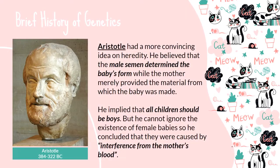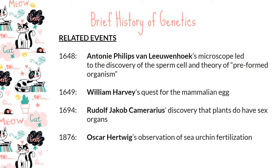After some time, nothing much progressed in the field of genetics — the field had not yet been formally created. But here are some related events. In 1648, Anton van Leeuwenhoek, with his microscope, discovered the sperm cell and the theory of a preformed organism — wherein a small individual is already contained inside the sperm cell and just grows inside the female's womb. In 1649, William Harvey successfully found the mammalian egg cell. In 1694, Camararius discovered that plants also have sex organs. And in 1876, Hertwig observed that sea urchins undergo fertilization.